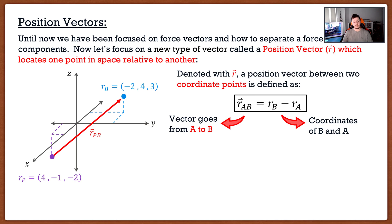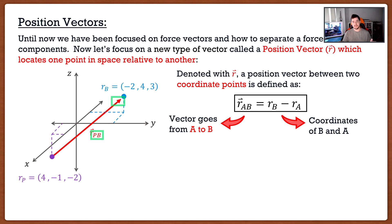If I'm starting from the purple point and going to the blue point, I would call this position vector PB. The key to keep in mind with position vectors is direction. If I'm going from P to B, my arrow starts at the purple point and goes to the blue point. If the arrow were the other way, this would be position vector BP. So let's do an example to show what I mean.